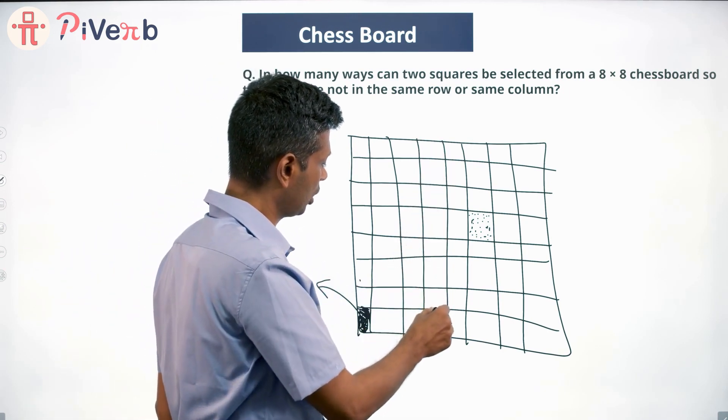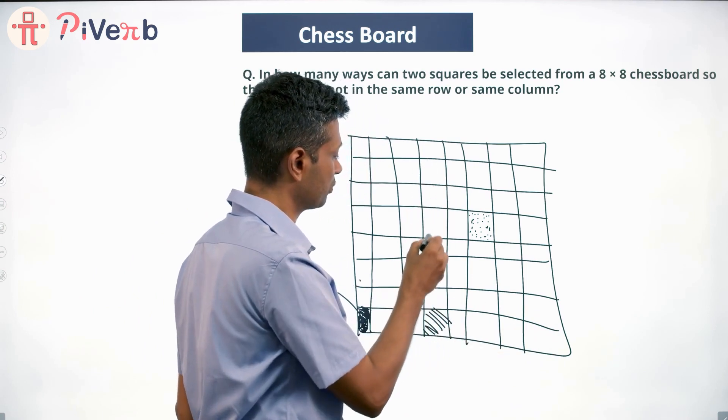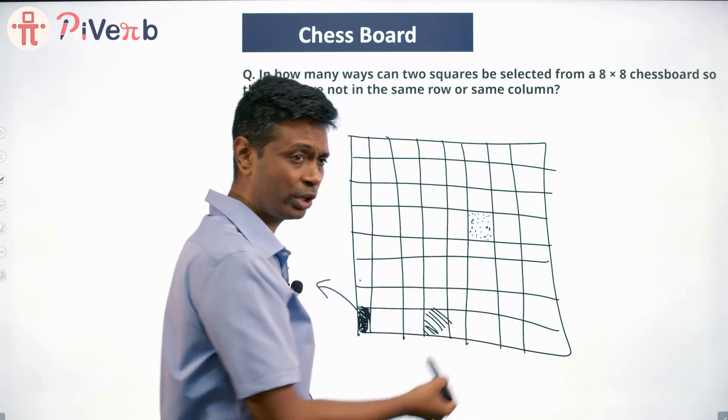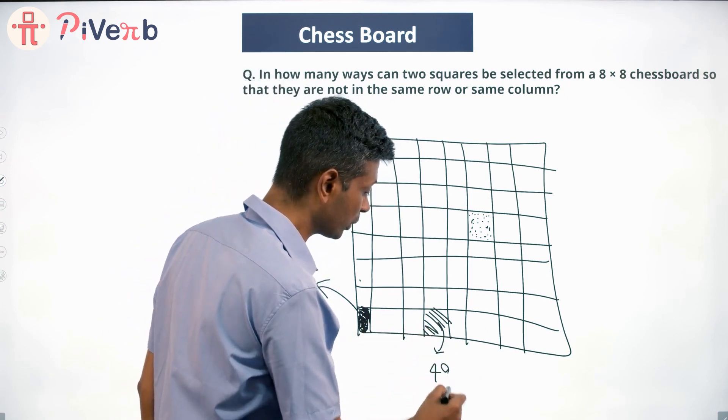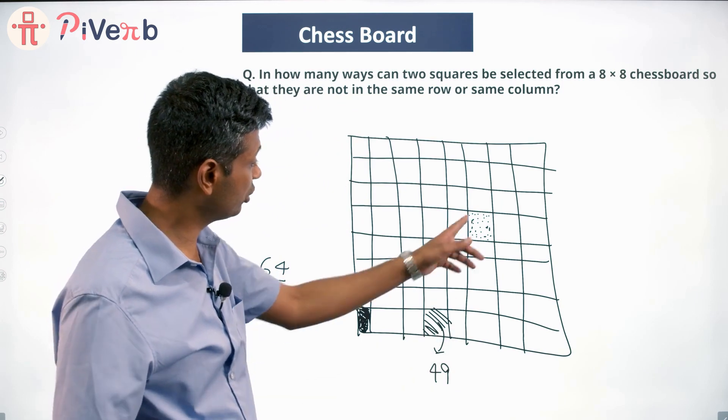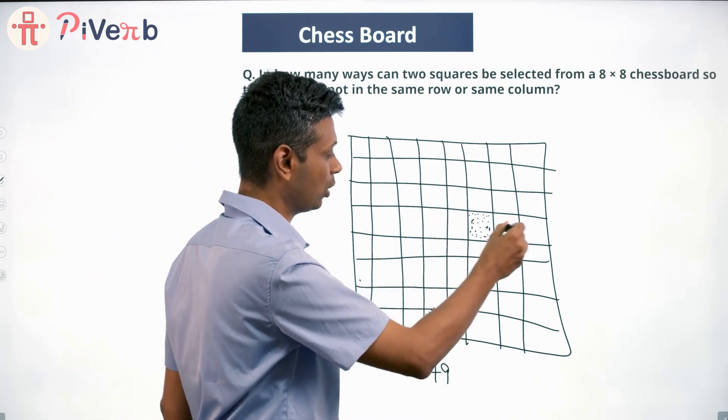If this were the first square, what do we eliminate? We eliminate this column and this row. One, two, three, four, five, six, seven; one, two, three, four, five, six, seven. Again, seven plus seven is fourteen plus one equals fifteen. This way, the scenario again we'll have 49 squares to choose from.